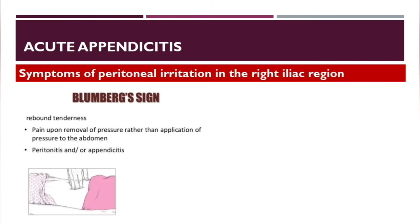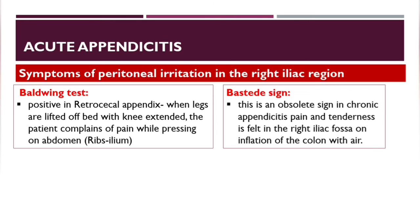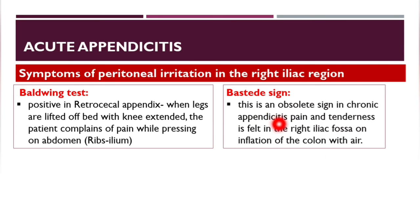Bloomberg sign (rebound tenderness) is pain upon removal rather than application of pressure — specific for peritonitis. Other signs of peritoneal irritation include the Bowdwig's test, positive in retrocecal appendix when legs are lifted with knees extended and the patient complains of pain while pressing on the abdomen. Busted sign is an absolute sign: pain and tenderness in the right iliac fossa on inflation of the colon with air.